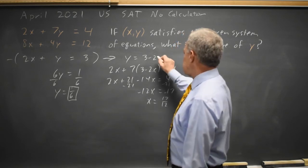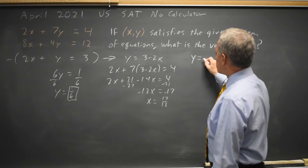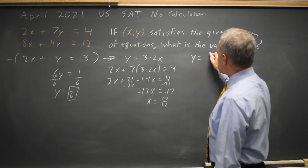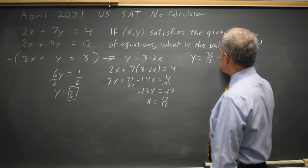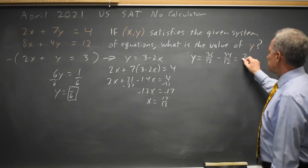I can then use that to solve for y in this equation. y equals 3, which is 36/12, minus 2 times 17/12, which is 34/12, equals 2/12, which is 1/6.